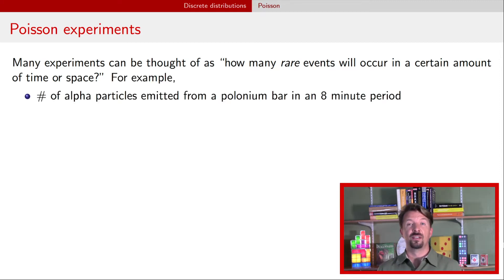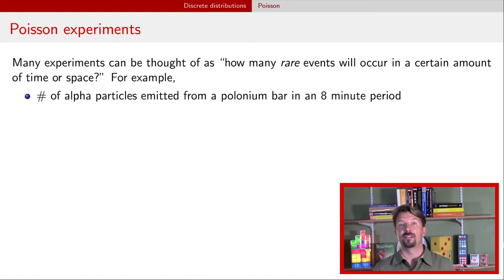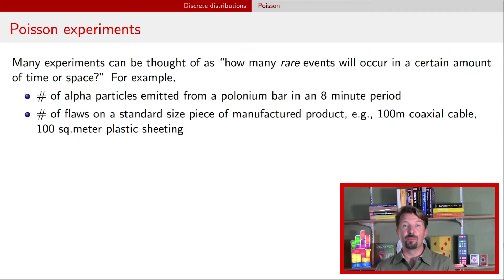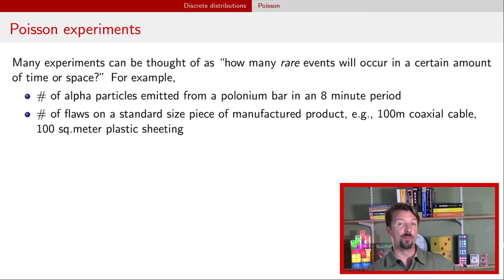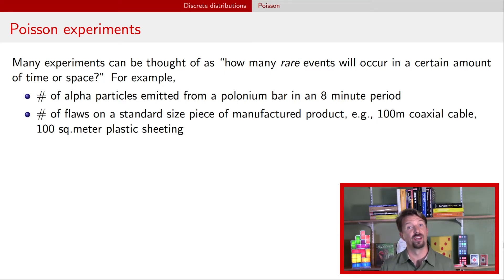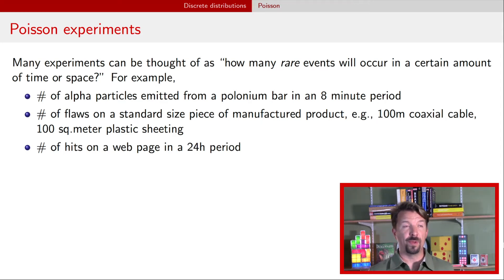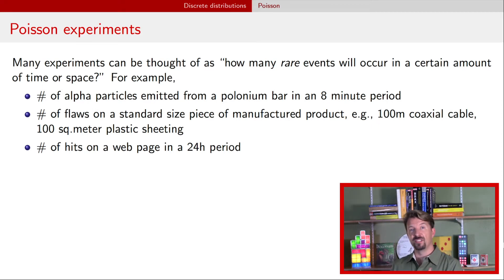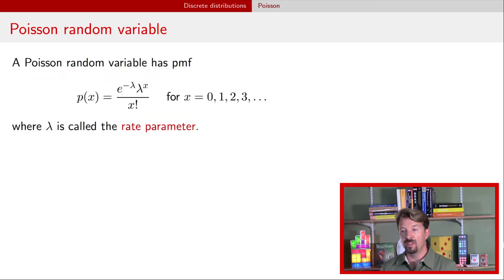Some realistic examples might be looking at the number of alpha particles emitted from a polonium bar in, say, an eight-minute period — that would be a count with no clear upper limit. Or the number of flaws in a manufactured product like coaxial cable — say, how many flaws in a hundred meters of coaxial cable, again with no clear upper limit. Finally, the number of web page visits on a particular website in 24 hours. All three are examples of counting occurrences of some event over some amount of time or space, and we use a Poisson random variable to model this kind of data.